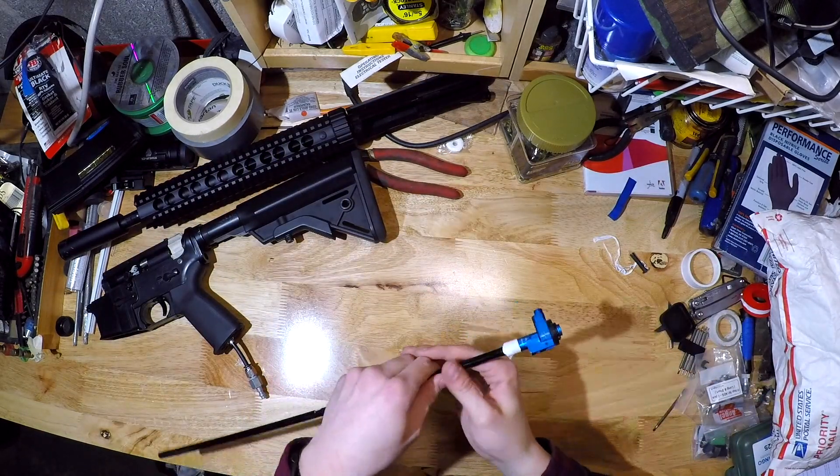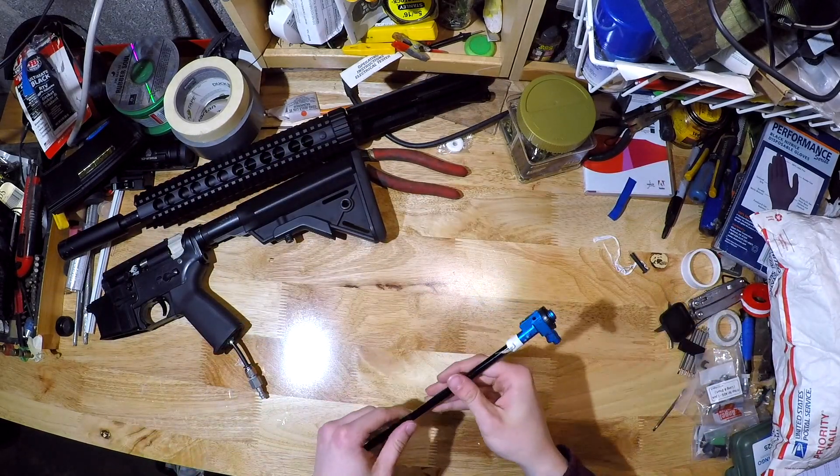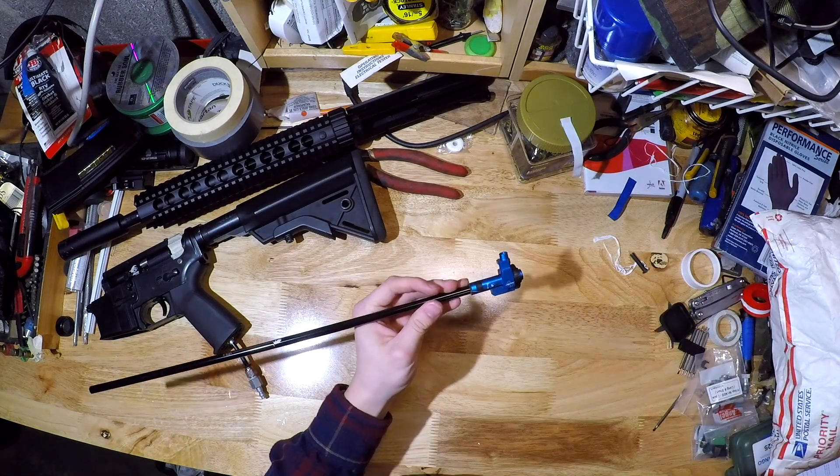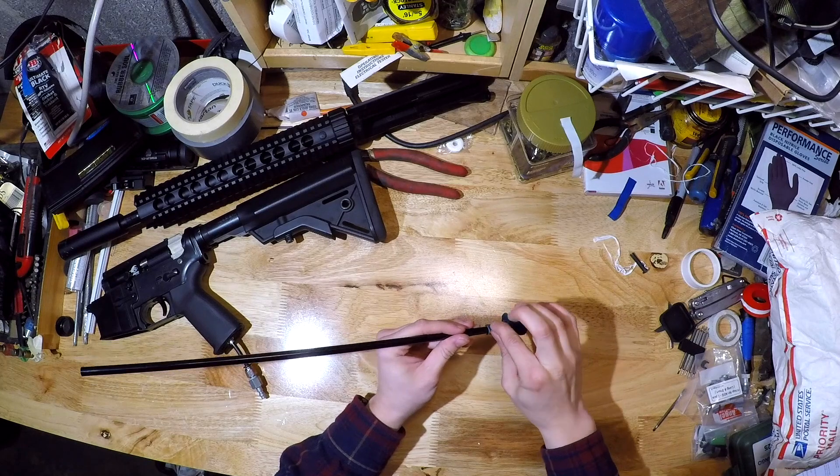We're going to remove the hop up chamber from the barrel and then we're going to take apart the hop up rubber and the hop up nub. If this is the first time you're doing it, I'll explain the components of this really briefly.